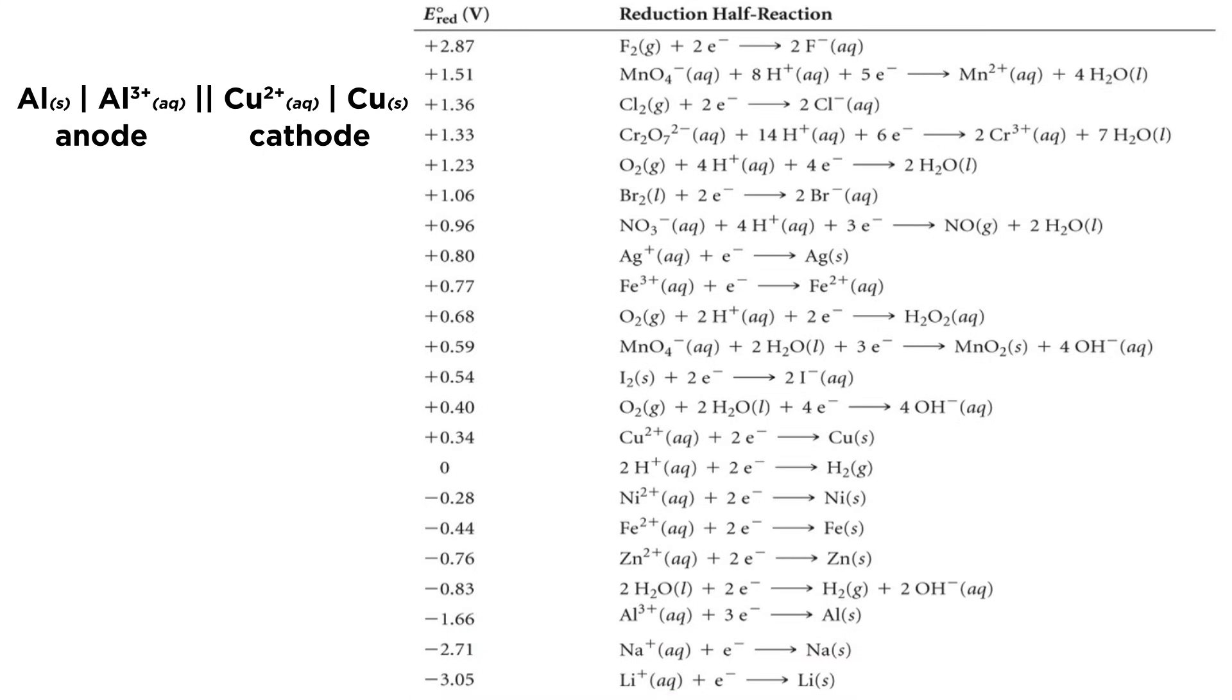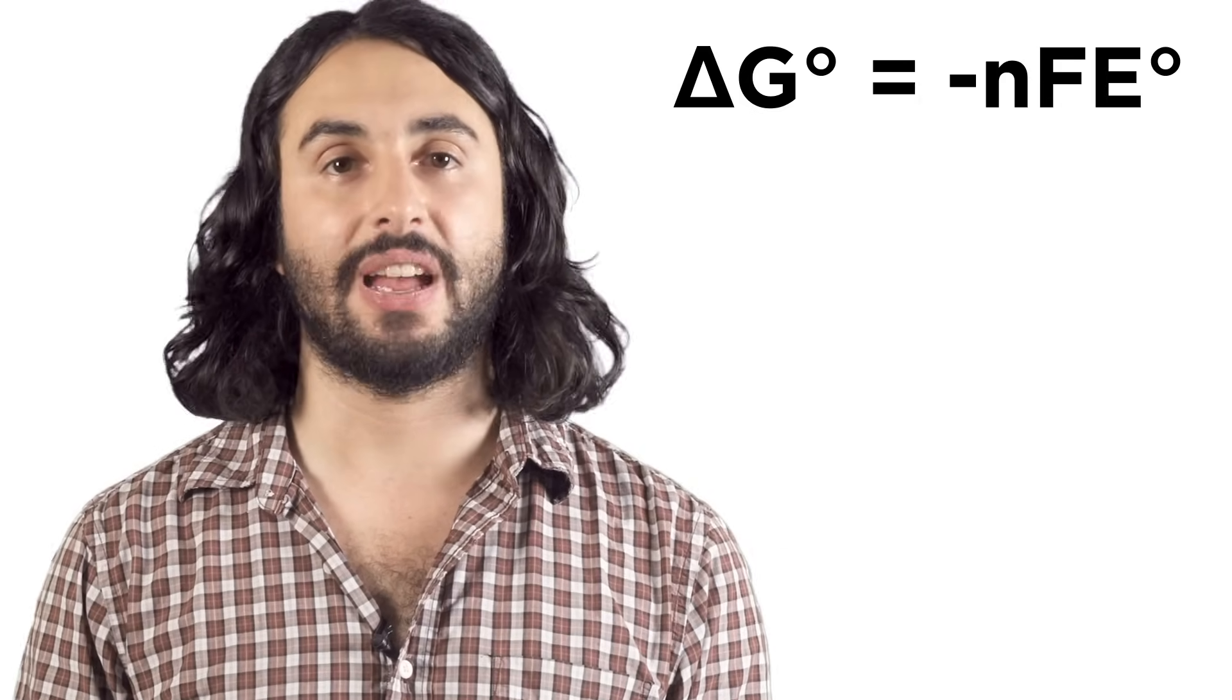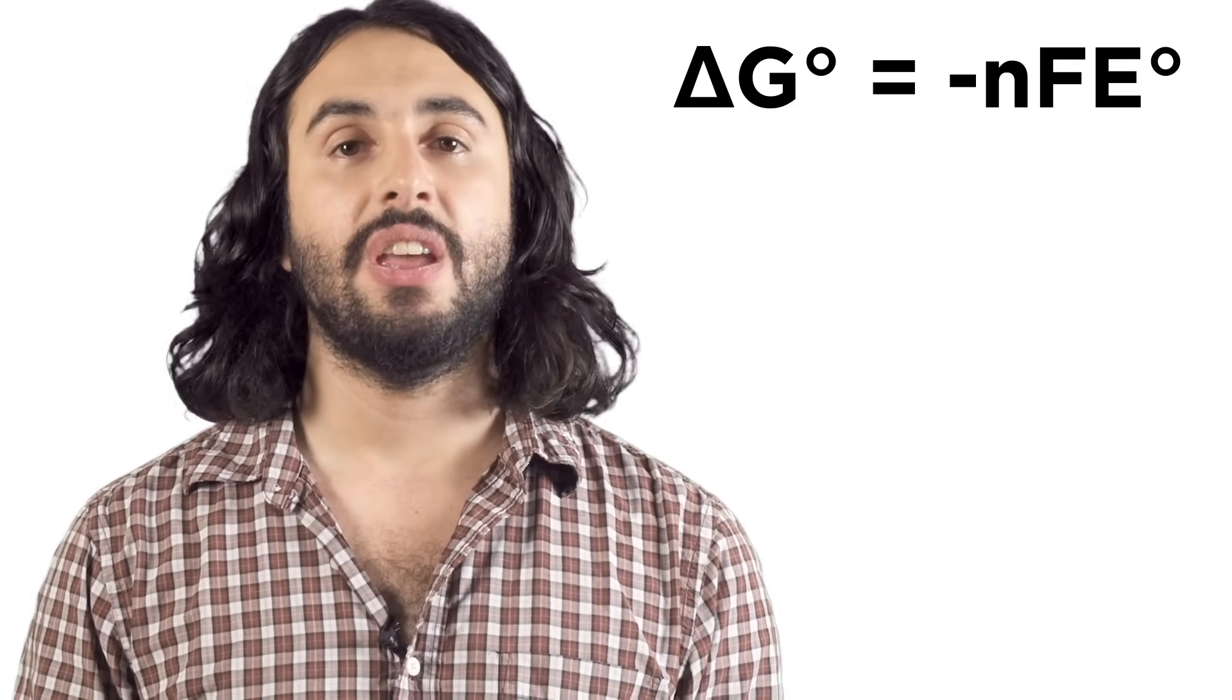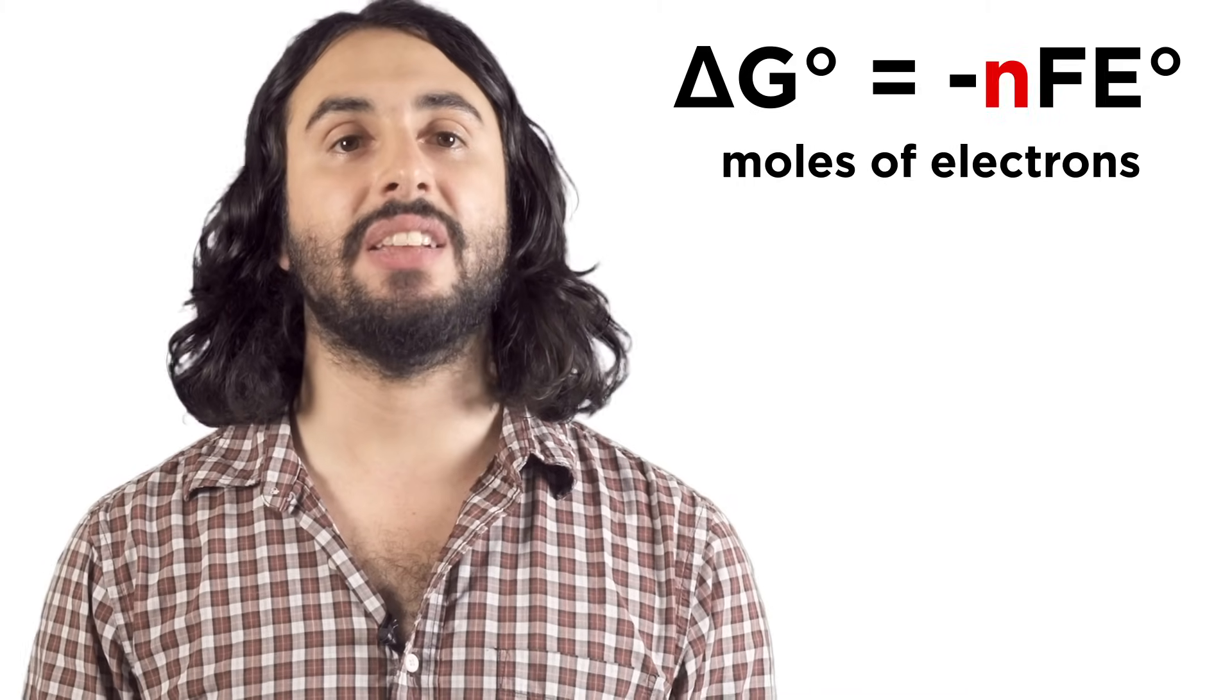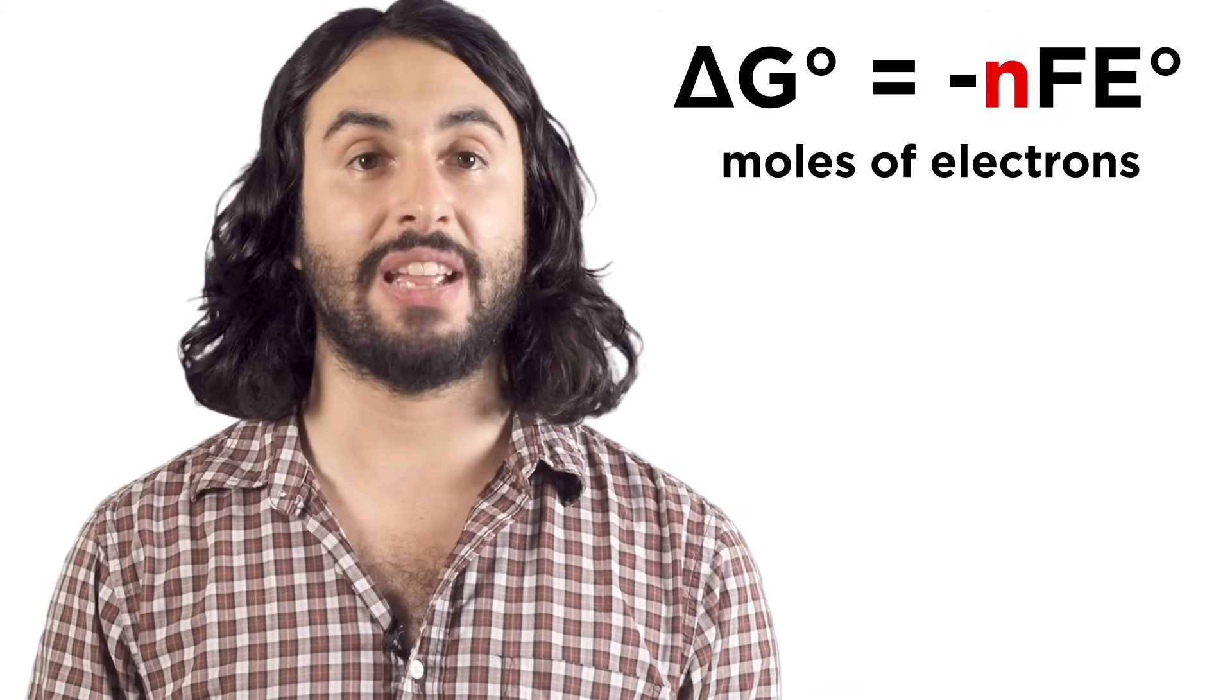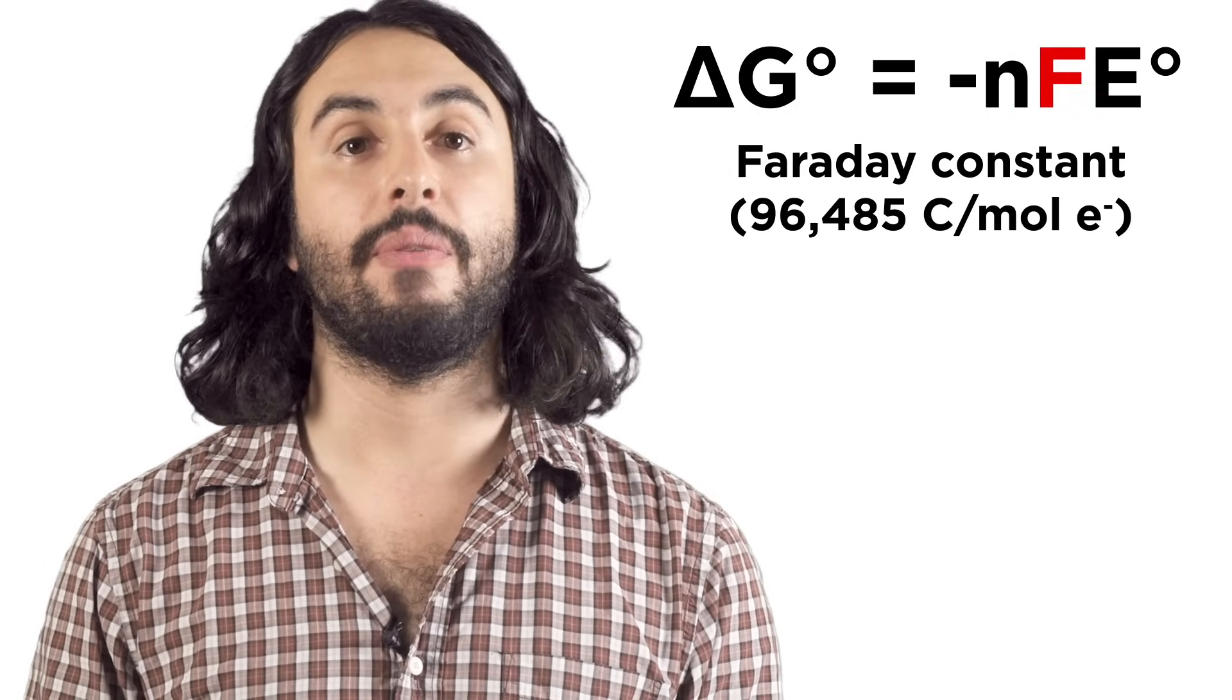To calculate E-cell for any hypothetical voltaic cell containing two of these substances, just calculate E-cathode minus E-anode. The larger the E-cell value, the greater the current the cell will generate. The change in Gibbs free energy for the cell can be related to the cell potential. This is the maximum work a voltaic cell is capable of. Here, n is the moles of electrons exchanged in the reaction, and F is the Faraday constant, the electric charge of a mole of electrons.